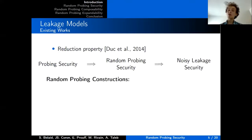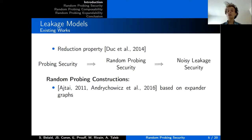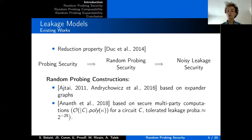There are some constructions that already exist in the random probing model. Mainly two of them are based on expander graphs, but they are not very simple to use and the tolerated leakage probability is not made explicit by the authors. A more recent work from 2018 is based on secure multi-party computation protocols and it tolerates a leakage probability of about 2 to the minus 25, with a complexity polynomial in the security parameter.